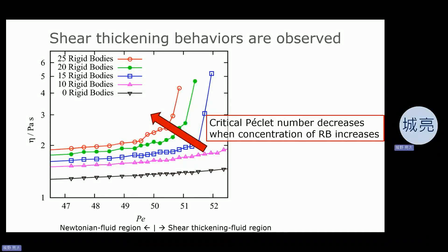The figure shows the rheology plot, that is, the plot of viscosity with respect to the Peclet number. All curves except for the reference system exhibit shear thickening behavior. The critical shear rate for shear thickening decreases when the concentration of the rigid bodies increases. This is in good agreement with the experimental results.